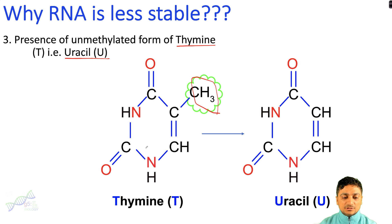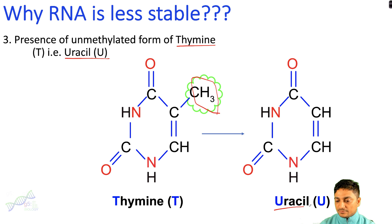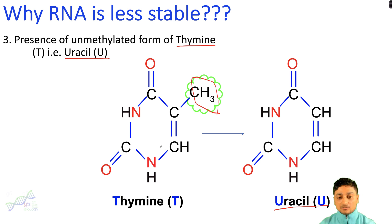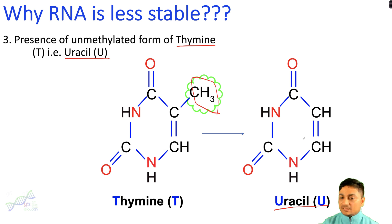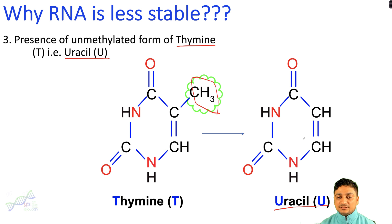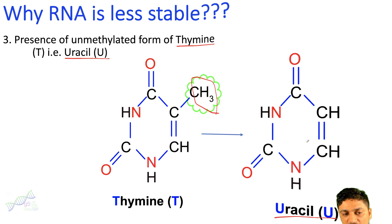In the DNA molecule, thymine is present and thymine carries a methylated group. However, in RNA, uracil is present and uracil is not methylated. Due to the methylation of thymine, the DNA structure is more stable. The RNA molecule is less stable because it does not have any methyl group in its base. This is the reason why RNA is less stable compared with the DNA molecule.